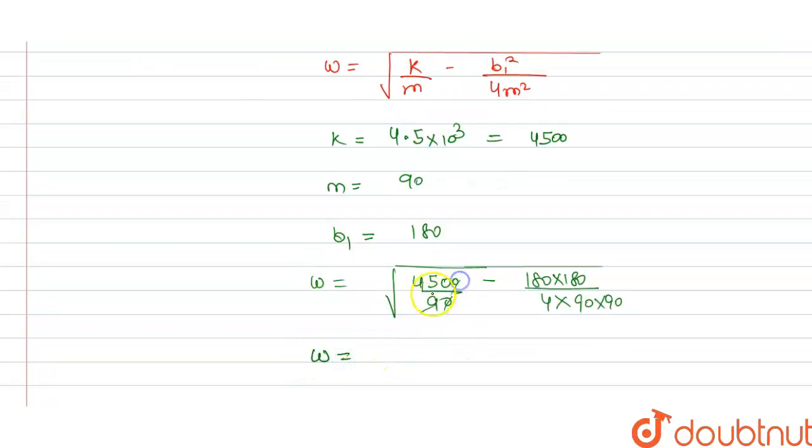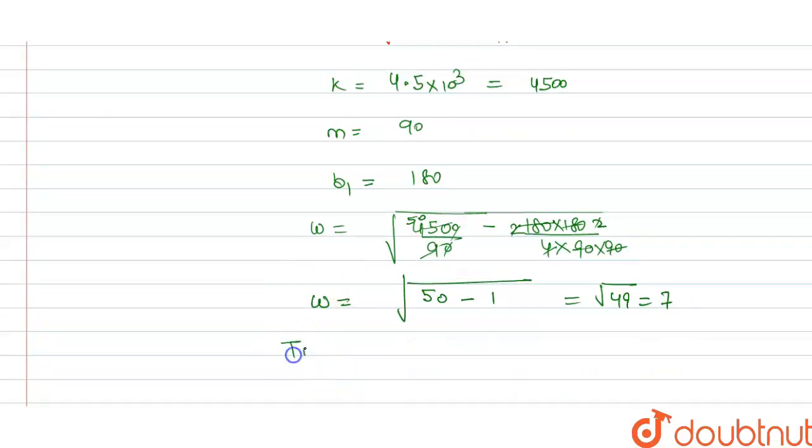From this we get omega equals to under root 50 minus... this 90 and 2 and 90 and 2 cancel out, and 2 and 2 will cancel out at 4, so this is 1. From this is 49, and this will equal to 7.